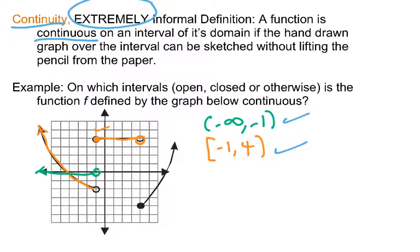Anywhere else? Well, I think you can see the idea now. As I draw the graph from here to here, again, I don't have to lift my pencil. What is the interval I am passing over on the x-axis while I draw that? Well, it would be the interval including that point, which is four, and continuing on to infinity.